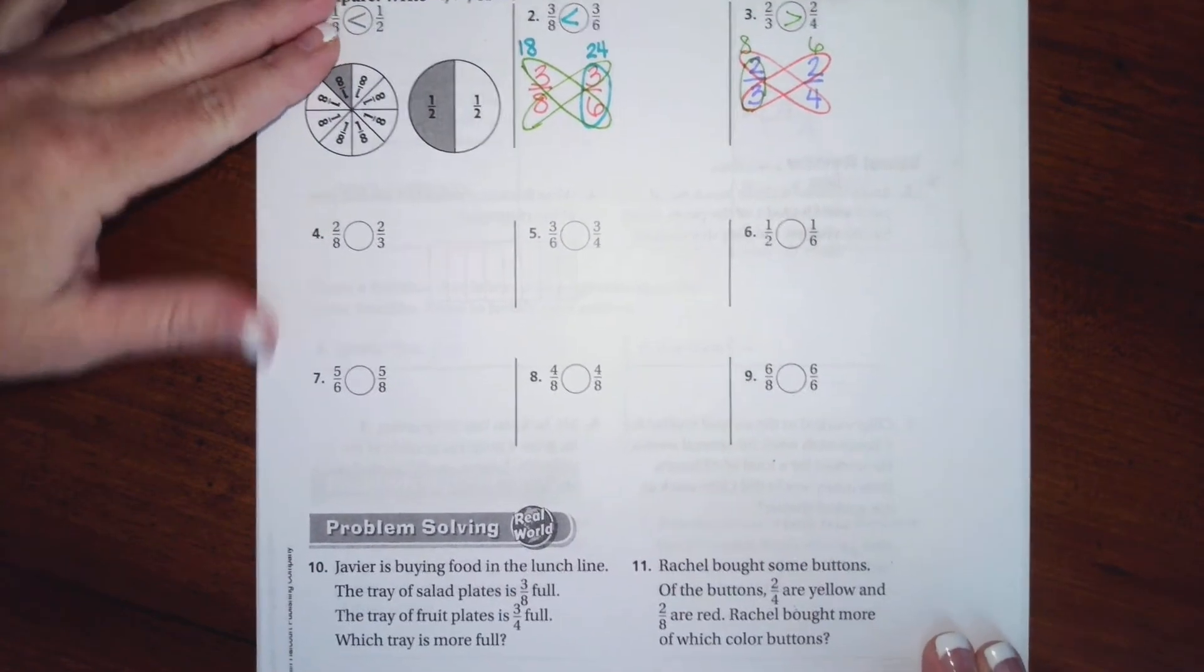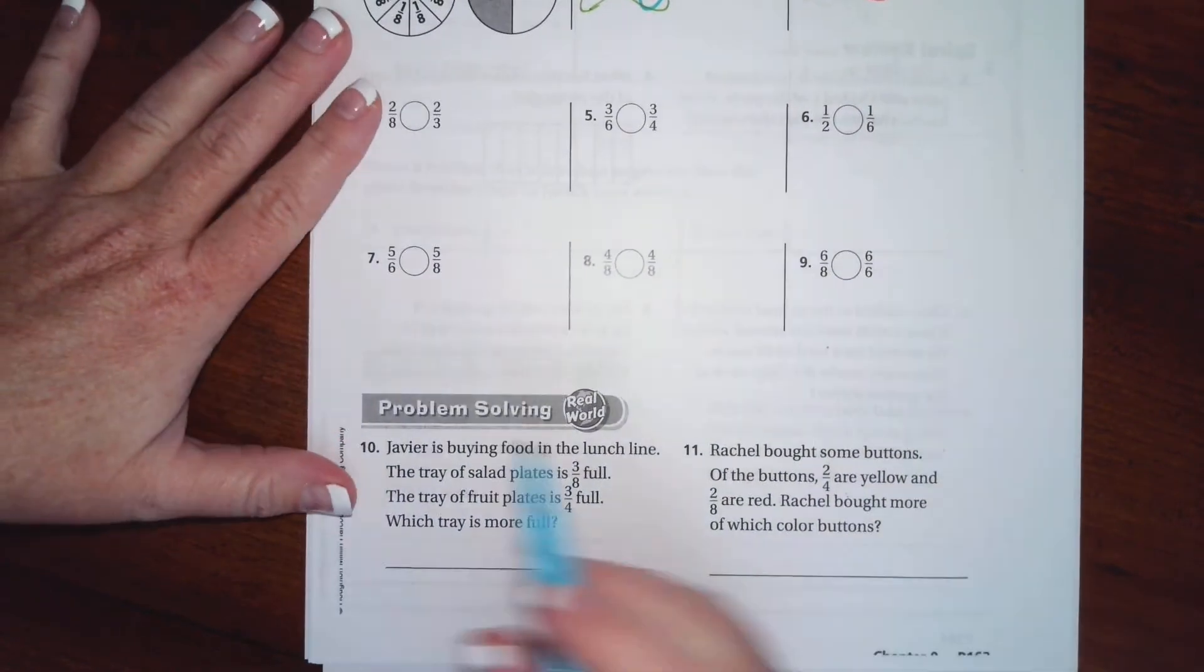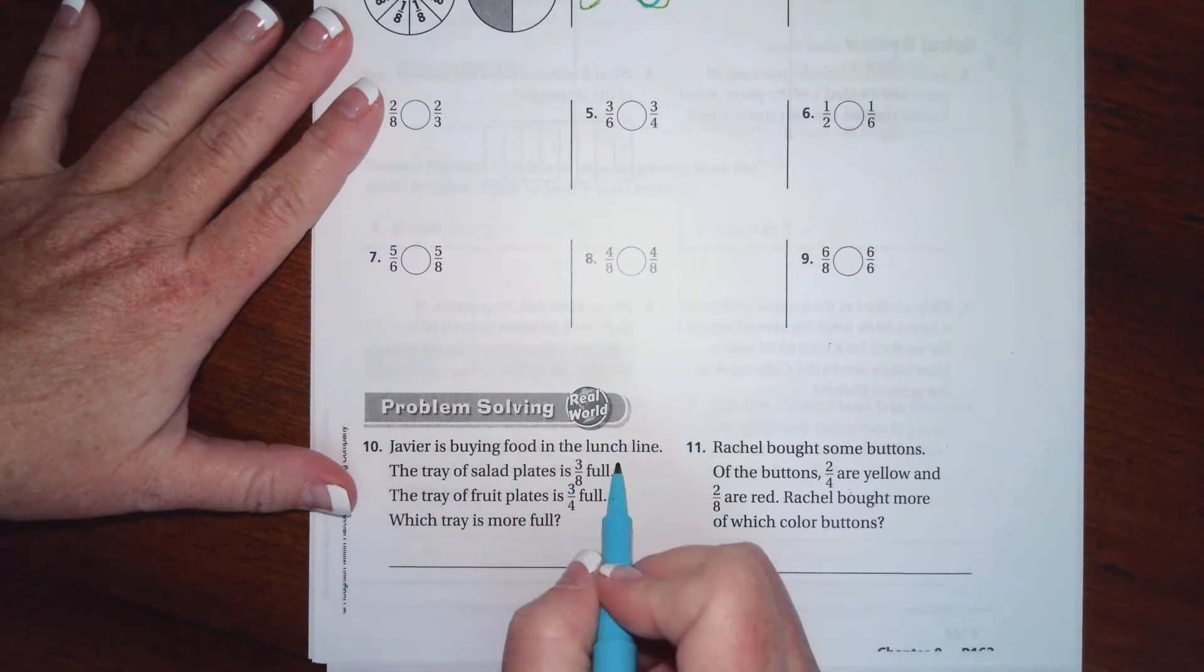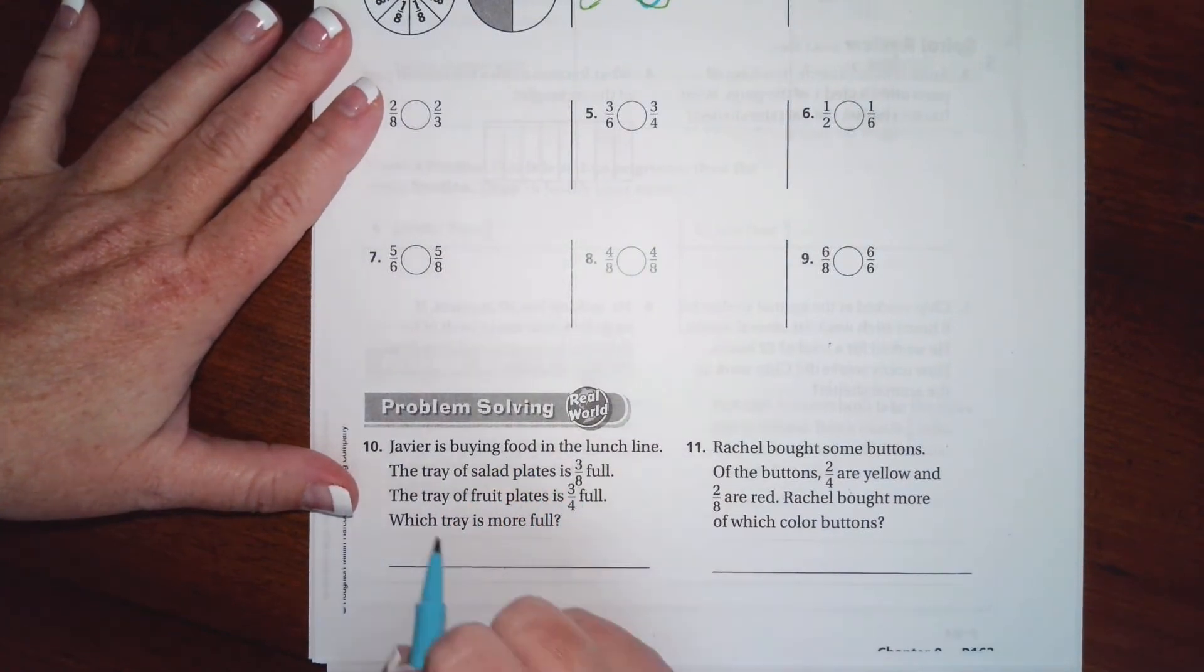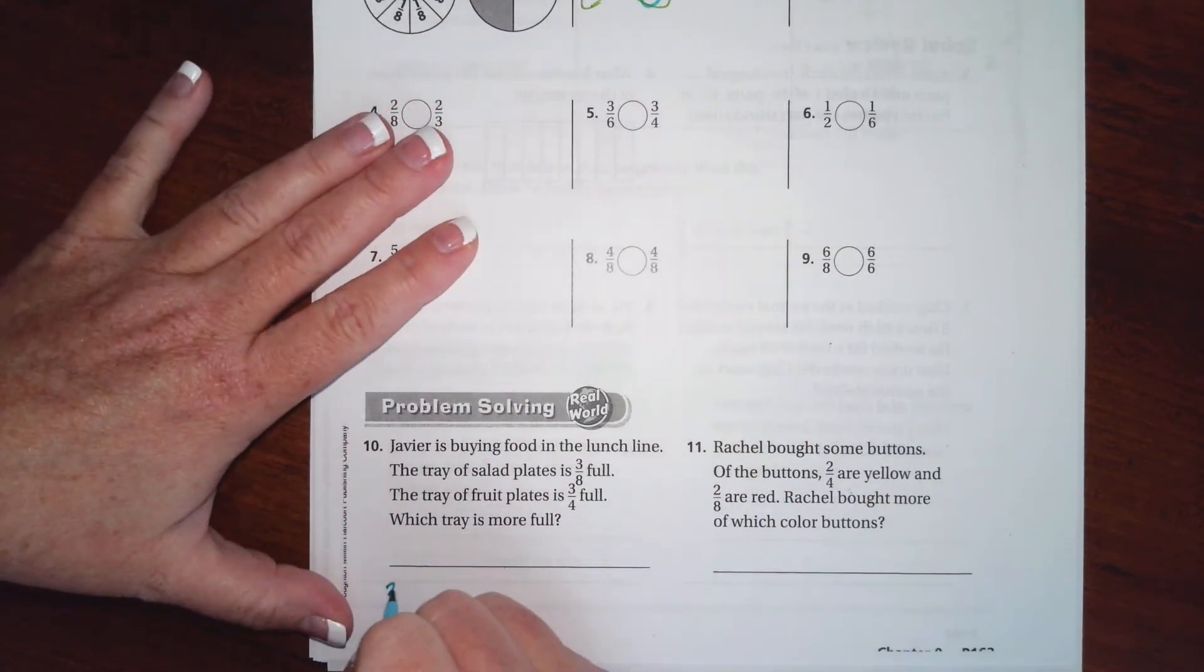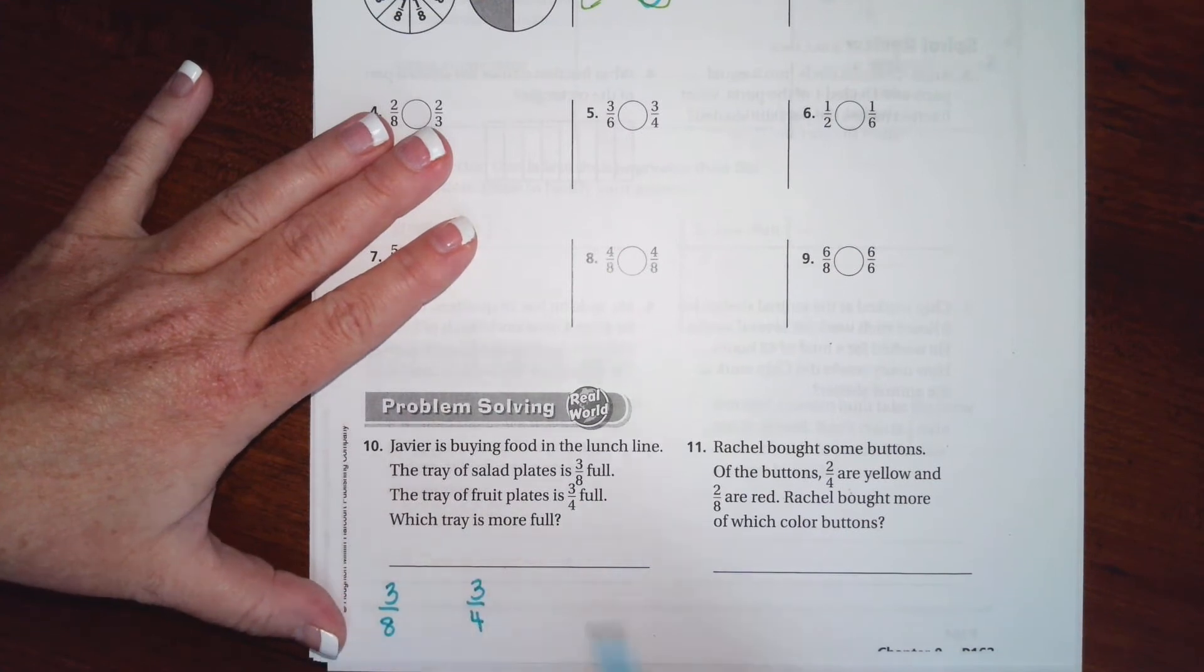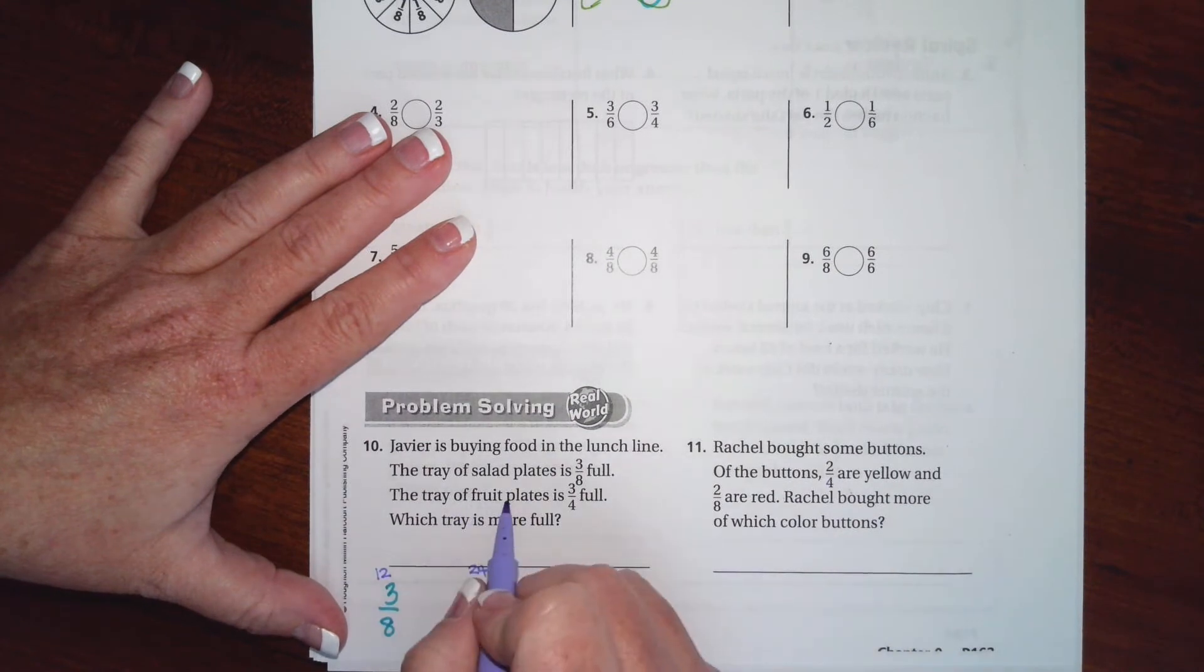Javier is buying food in the lunch line. The tray of salad plates is three-eighths full. The tray of fruit plates is three-quarters full. Which tray is more full? So again, three-eighths, three-quarters. I'm gonna go eight times three, twenty-four. Four times three, twelve. This one's bigger, so fruit plates.